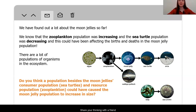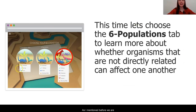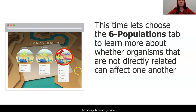Share your thinking with a friend or family member. So this is going to be our focus question for today and tomorrow: how could a population besides the zooplankton or the sea turtles have caused or had an effect on the Moon Jelly population increase? We are going to get out the digital model to do some investigating. Because we are focusing on organisms in the ecosystem that are not necessarily directly related to the Moon Jelly, we are going to use the six populations digital model to look at whether organisms not directly connected to each other can affect the population sizes of other populations.